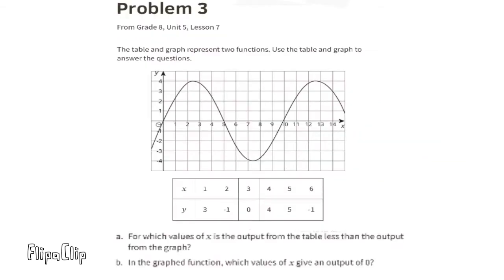Problem number three, from eighth grade unit 5 lesson 7. The table and graph represent two functions; use them to answer the questions. Part a: for which values of X is the output from the table less than the output from the graph? When X is 1, the table gives Y equals 3, and the graph gives Y a little more than 2. The table has a higher output, so no for X equals 1. When X is 2, the table gives Y equals negative 1, but the graph gives Y almost positive 4. Yes — the table output is less than the graph output.